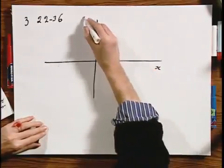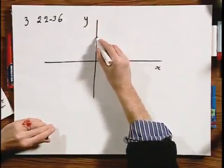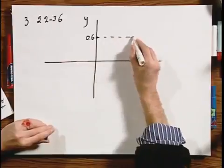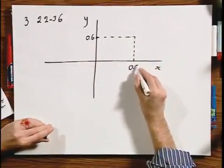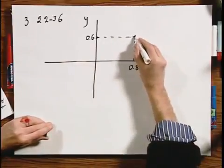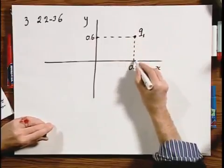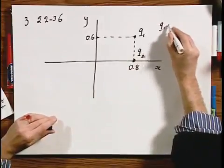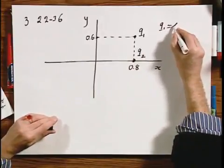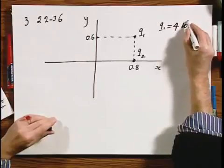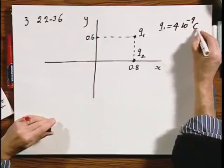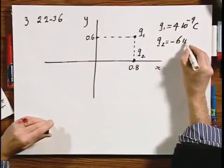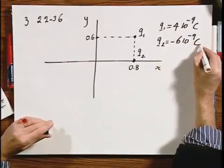This is x and this is y. And there is a charge q1 at these locations in x and y. Here is q1. And there is here a charge q2. And q1 is positive, is 4 times 10 to the minus 9 Coulomb. And q2 equals minus 6 times 10 to the minus 9 Coulomb.